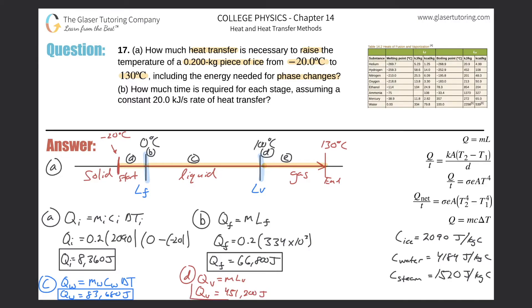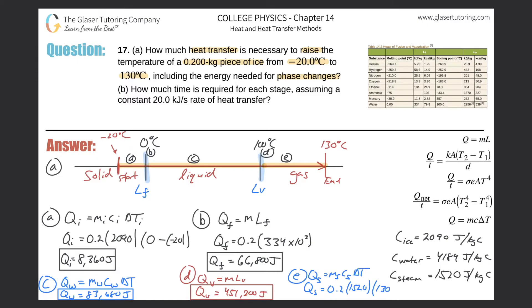Last, part E: heating the steam from 100 to 130 degrees Celsius. q of steam = mass × specific heat of steam × ΔT. The specific heat of steam is about 1,520 J/(kg·°C). So: 0.2 × 1520 × (130 − 100) = 0.2 × 1520 × 30 = 9,120 joules.